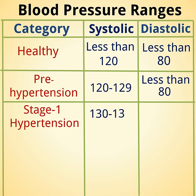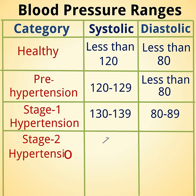Stage 2 hypertension has more than 140 systolic pressure, and 90 or higher diastolic pressure.